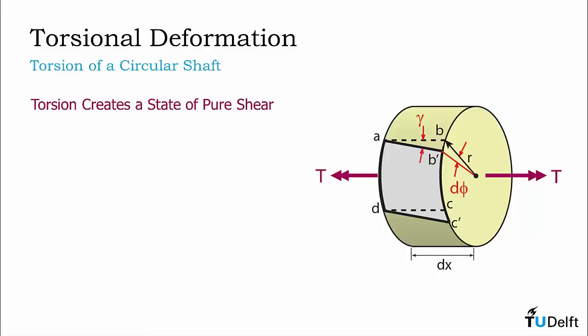This angle is equal to the rotation of point B relative to point A along the axis of the shaft. On the surface of the shaft, our infinitesimal element must shear by angle gamma to be compatible with this deformation. This angle gamma is exactly the shear strain experienced by the element.